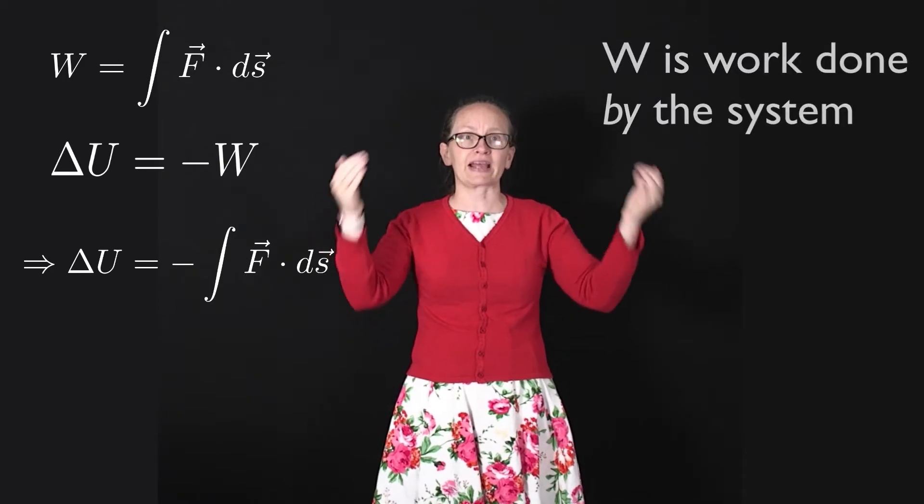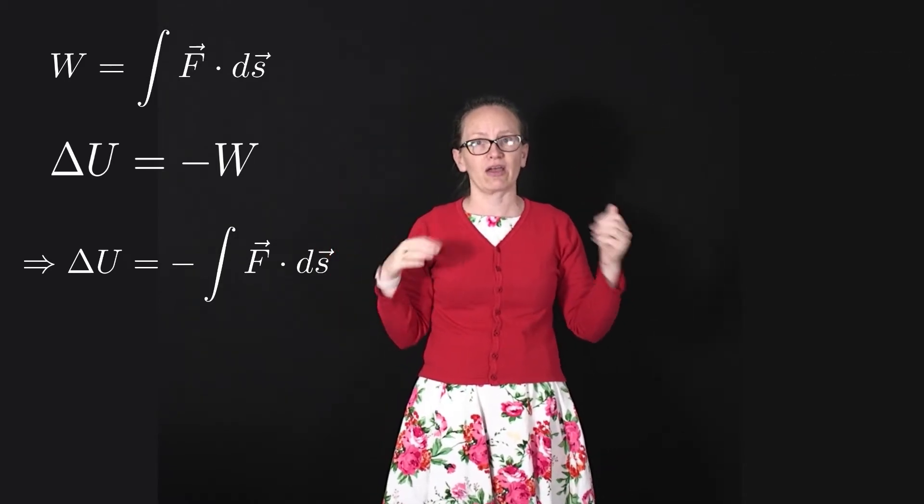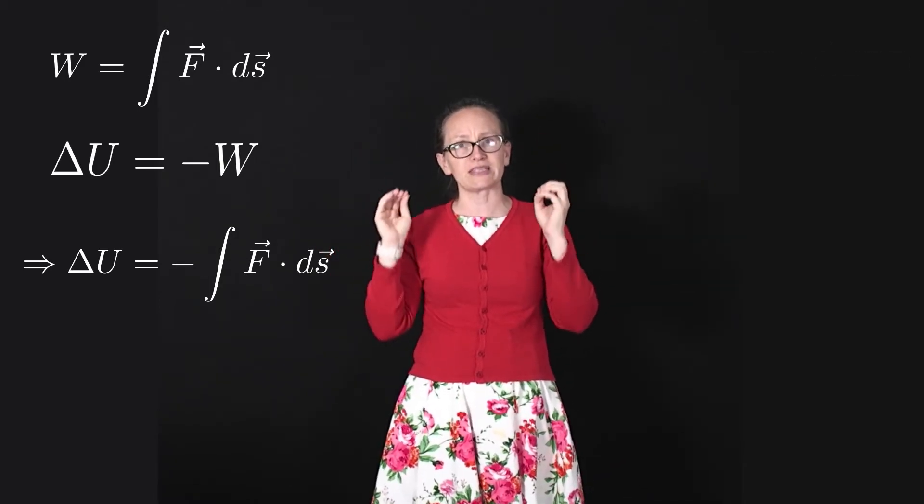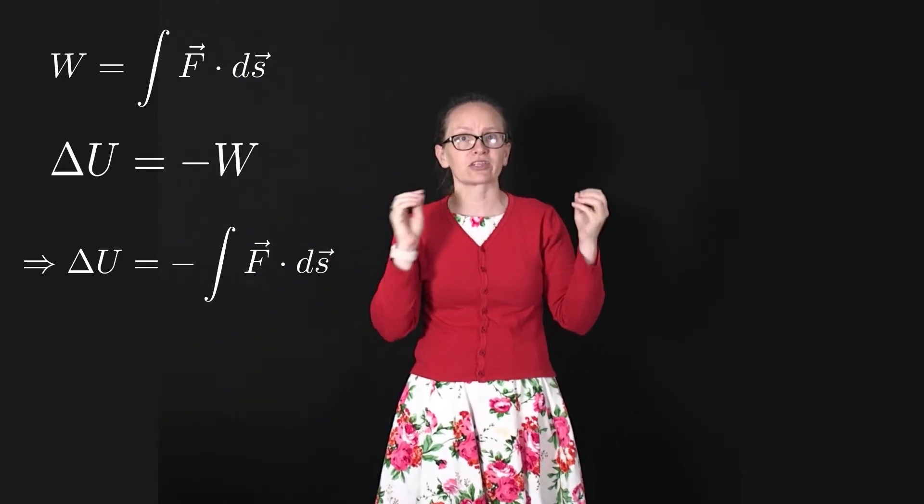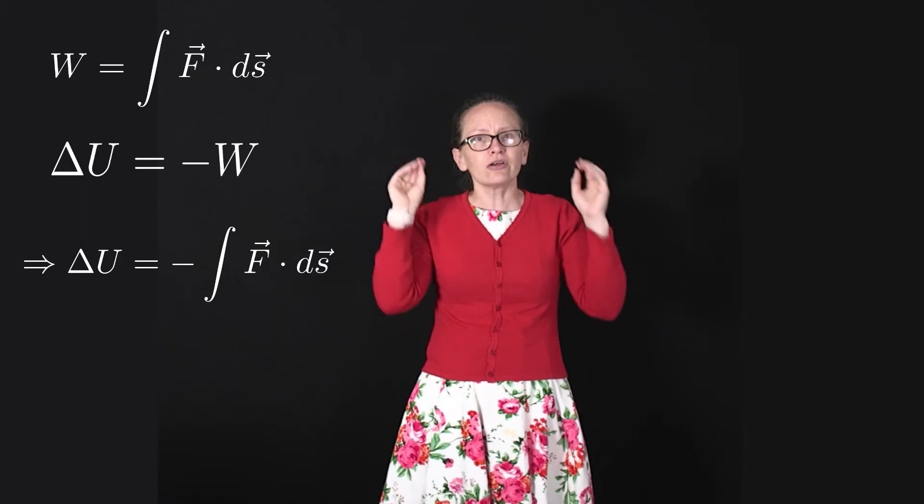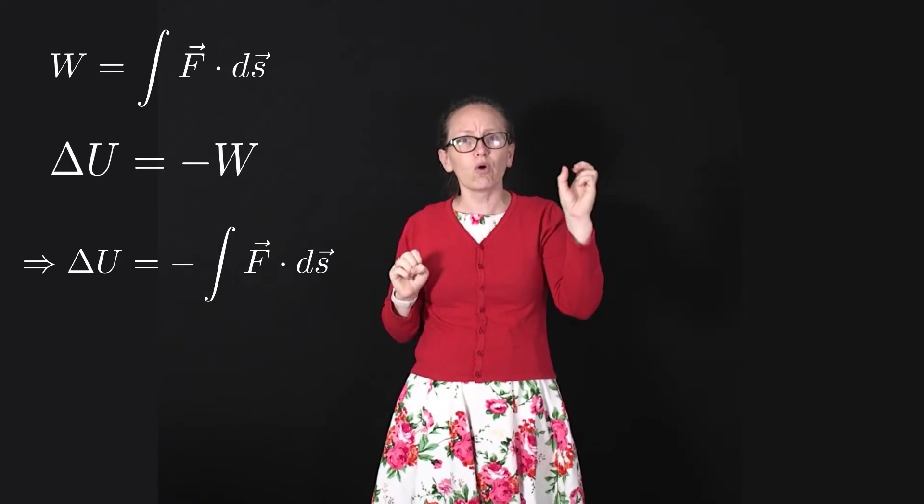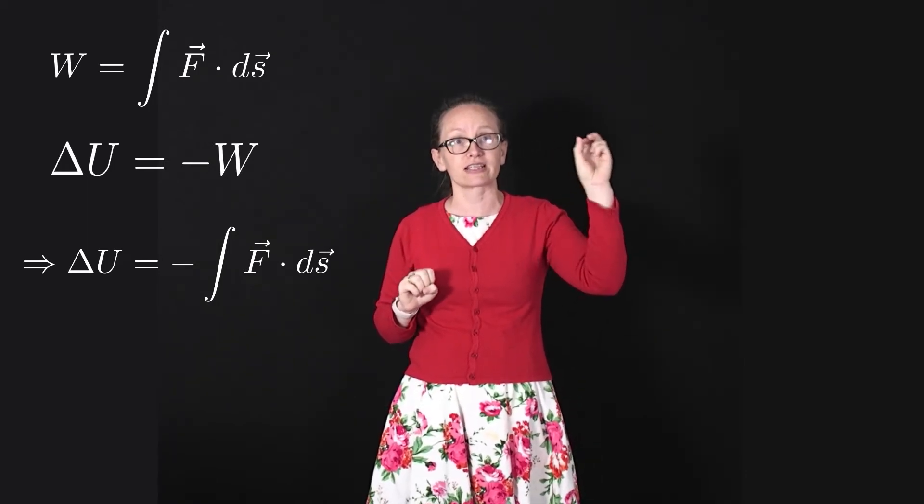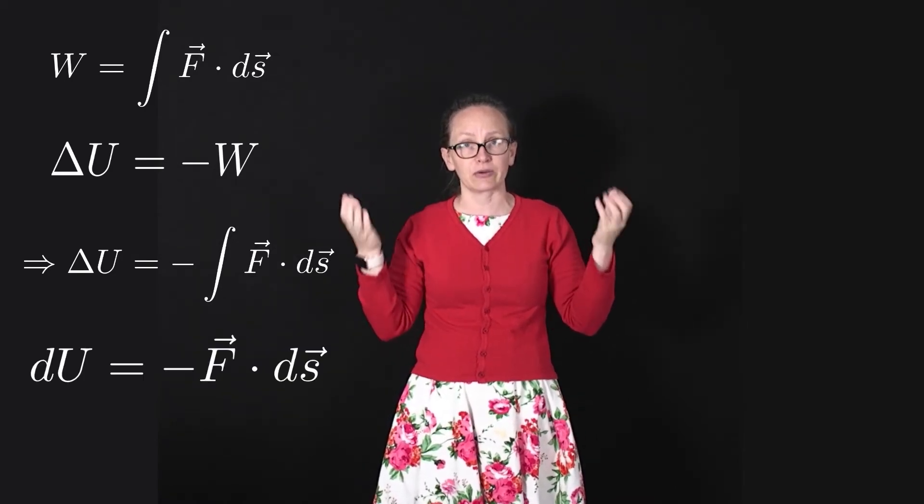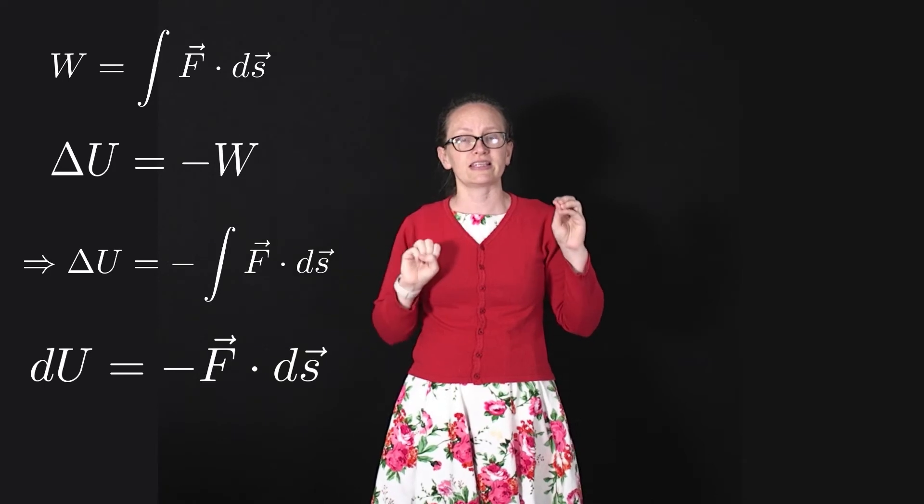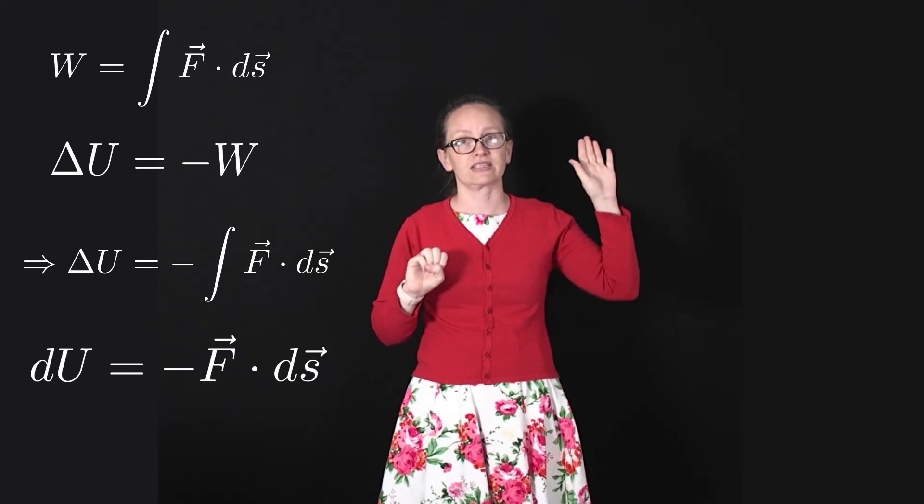Now we can actually work back the opposite way as well. If we know about how the potential energy is changing, then we can work out the size of the force. So let's consider a small increment of that displacement, so just a little bit ds. So in that case, we can write this equation as dU is equal to minus F·ds.